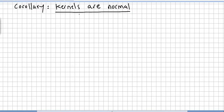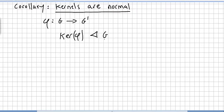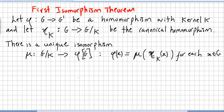A quick corollary: kernels are normal. If phi is a homomorphism from G to G-bar or G-prime, then the kernel of phi will be a normal subgroup of G. This leads us into the very important theorem: the First Isomorphism Theorem.